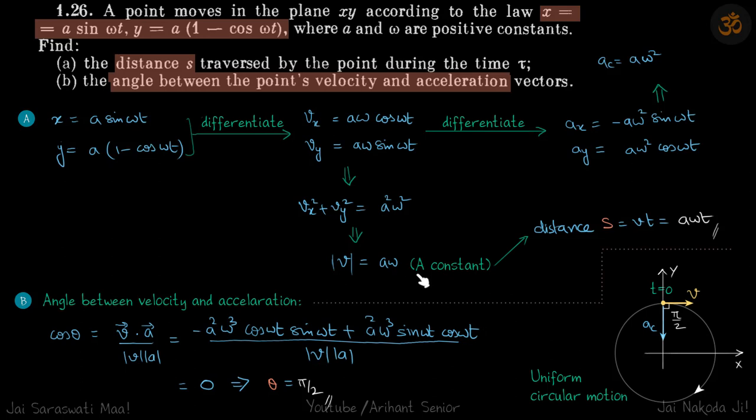If the velocity is constant, then distance can be directly written as V times τ, which is a omega times τ. This is the first part.